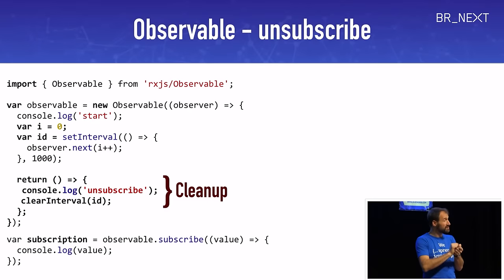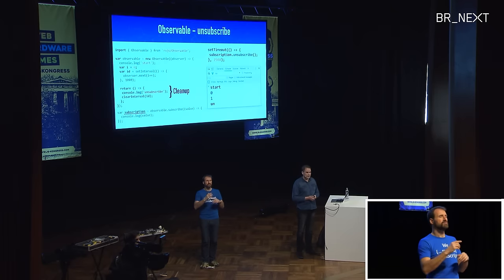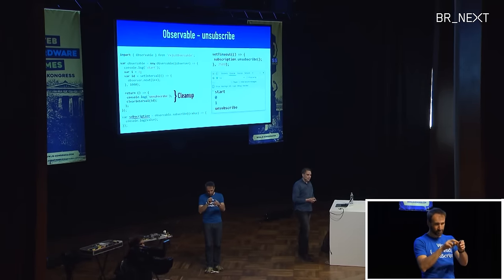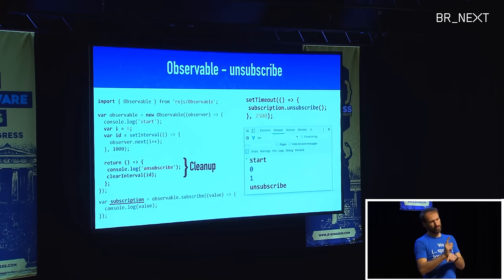There's also an unsubscribe method you can use to do some cleanup. When somebody says they don't want new values anymore, we can do cleanup in the return function of that observer. In this example, I clear the interval created above to stop emitting new values. When someone calls the unsubscribe method — here I'm doing this after 2.5 seconds — the cleanup function gets called. So you'd see in the browser: start, then 0 and 1, and then unsubscribe after 2.5 seconds, and the observable stream is over.